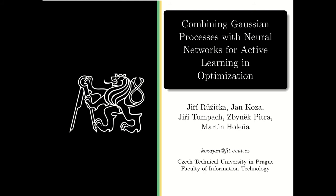Hello everyone, my name is Jankoza and I would like to present to you our paper called Combining Gaussian Processes with Neural Networks for Active Learning in Optimization. It was written by Jiří Ružička, myself, Jiří Tumpach, Zbigned Pitra and Martin Holeně.